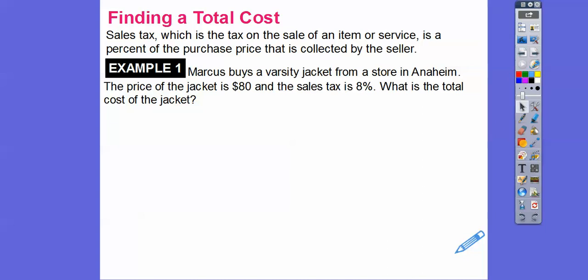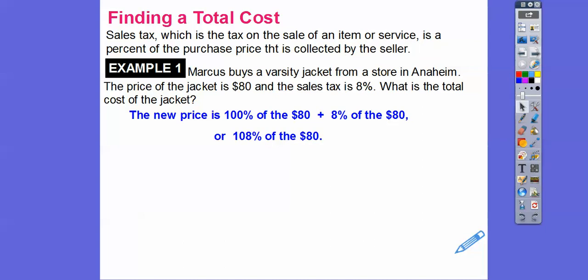Marcus buys a varsity jacket from a store in Anaheim. The price of the jacket is $80, and the sales tax is 8%. What is the total cost of the jacket? The quick way is the new price is 100% of the $80 plus 8% of the $80, so 100% plus 8% is 108% of the $80. So 108% is 1.08, so we just multiply 1.08 times 80, and we get $86.40. So the total cost of the jacket is $86.40.